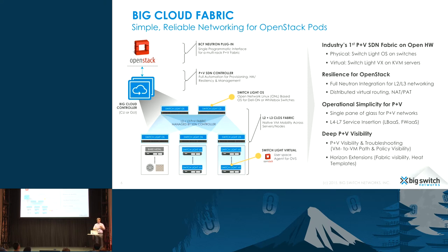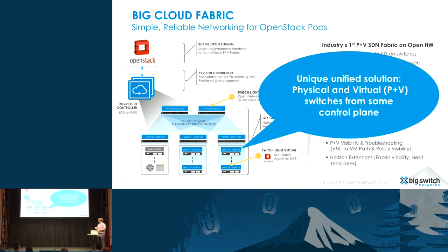We can actually implement distributed virtual routing, both across physical switches as well as virtual ones. That means you can get the equivalent of distributed routing for your virtual workloads as well as your physical workloads and the combination of the two. We have our own Neutron plugin available through the OpenStack distribution, with integration with Red Hat, Mirantis, and Canonical coming soon. To the best of my knowledge, we're the only company that provides this integrated support of the physical and the virtual nodes, particularly for OpenStack.